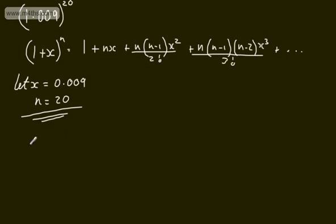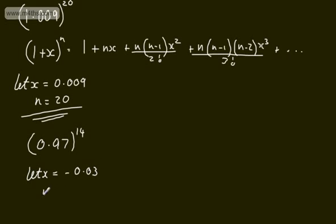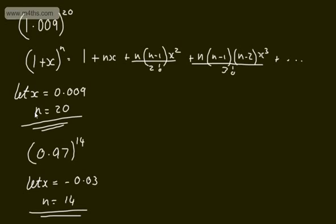Another example: finding 0.97^14 to 9 decimal places. Here we let x = −0.03 and n = 14, then substitute and expand. In terms of x, the smaller the value the better. In terms of the number of terms, the more the better. In later units we'll look at when n is not a positive integer and the associated constraints, but for positive integer n we can substitute any value of x.